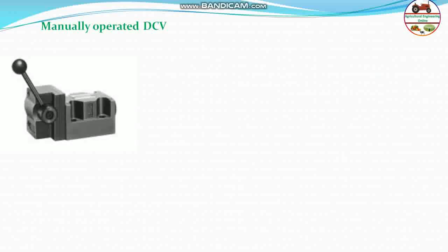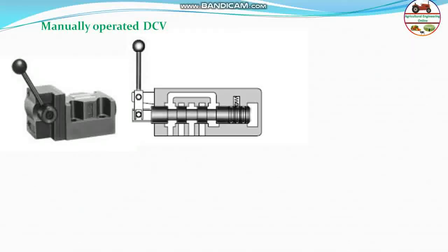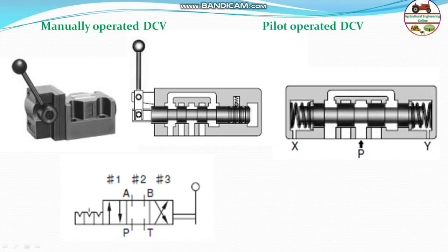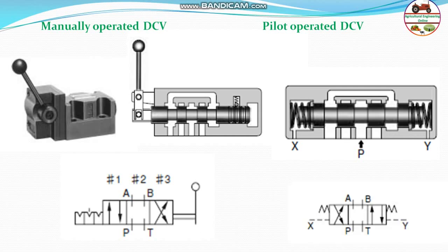Coming to the manually operated directional control valve (DCV). It is generally operated manually by a hand lever to have different positions — a three-position valve with neutral in between to hold the machinery in the correct position. There is also a pilot-operated DCV where a pressure of less than 0.5 MPa is directed to the pilot port, causing the directional control valve to operate. The symbol shows a small pilot port Y.